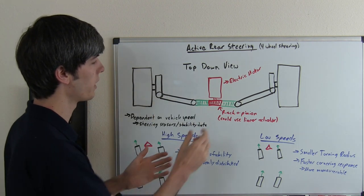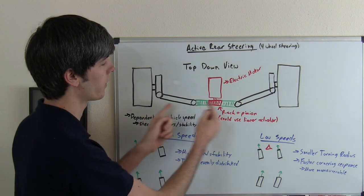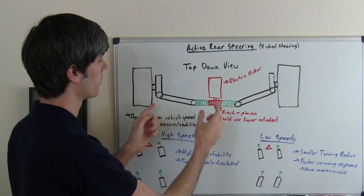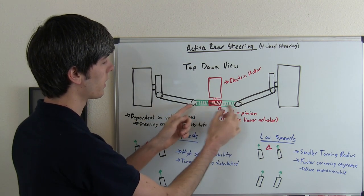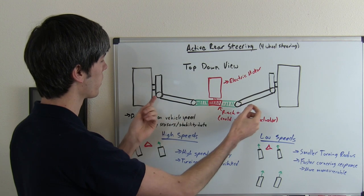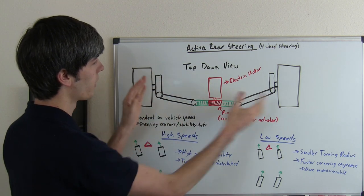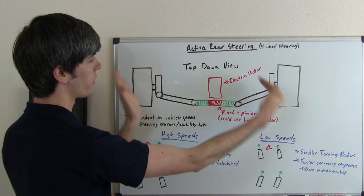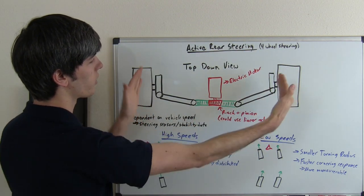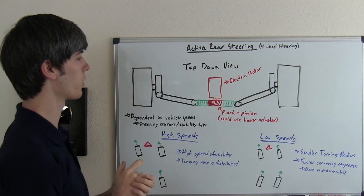That gear meshes with the rack and pinion and can rotate to move this linear rack back and forth. By moving this linear rack, it will pull on this linkage here, and that will rotate one tire this direction and the other tire that direction. They'll turn that way, or it can rotate the other direction and turn the wheels the other direction.